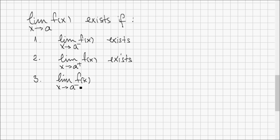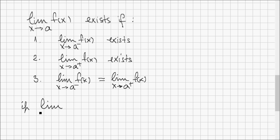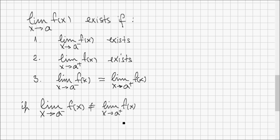So the limits from the left and from the right both have to exist and they also have to be equal. Of course, if the limit of f of x when x approaches a from the left is different from the limit of f of x when x approaches a from the right, then the limit of f of x when x approaches a does not exist.